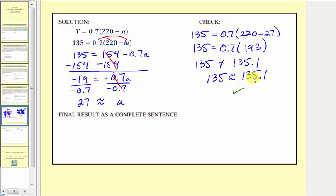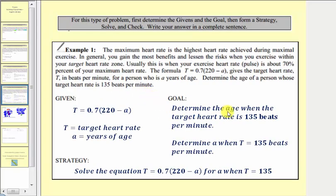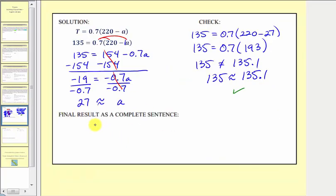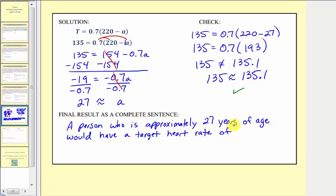The final step is to write our answer in a complete sentence. If we go back to the question, remember our goal was to determine the age when the target heart rate is 135 beats per minute. Therefore the answer as a sentence would be: a person who is approximately 27 years of age would have a target heart rate of 135 beats per minute. I hope you found this helpful.